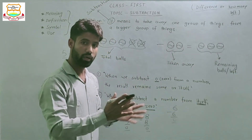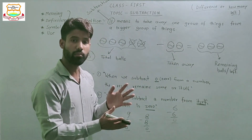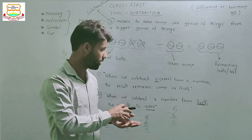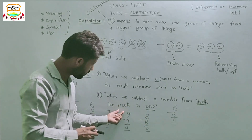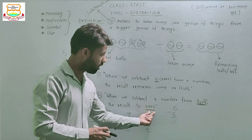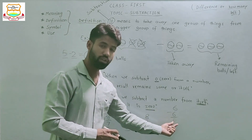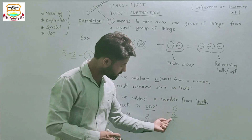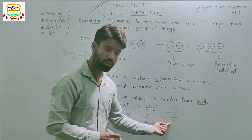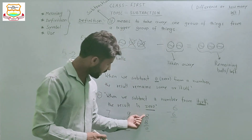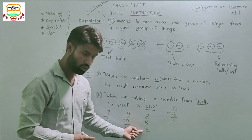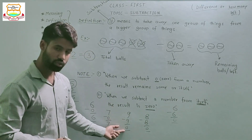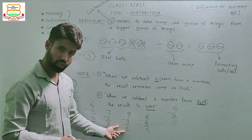When we subtract a number from itself, the result is always zero. For example, six minus six equals zero, eight minus eight equals zero, and nine minus nine equals zero.